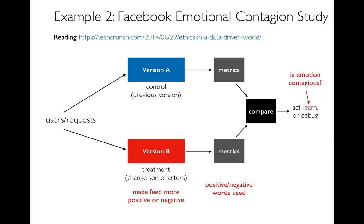They would identify posts that are either positive or negative and show those to you with greater percentage frequency. The metric they collected was: after being exposed to this, the next time you make a post, how positive or negative are you? There are certain words identified as positive or negative — like 'happy' — and they could see what percentage of positive or negative words you used. They did the comparison and could learn if emotion is contagious.